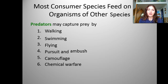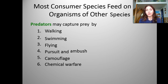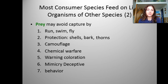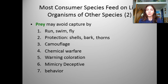Most consumer species feed on live organisms of other species. Predators can capture prey in many different ways: walking, swimming, flying, pursuit and ambush, camouflage, and also by chemical warfare — an example being a jellyfish. Prey can avoid capture by similar methods: running, swimming, flying, protective measures such as shells, bark, and thorns like thorns on a rose bush. They can also camouflage themselves. Chemical warfare — an example being the ink that a squid squirts out.